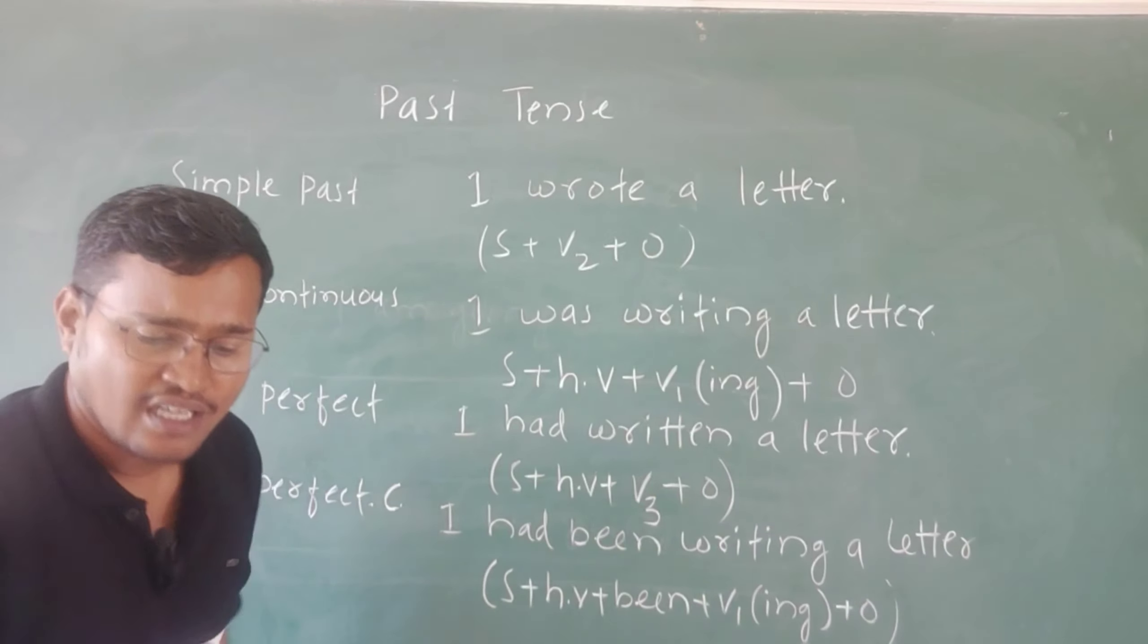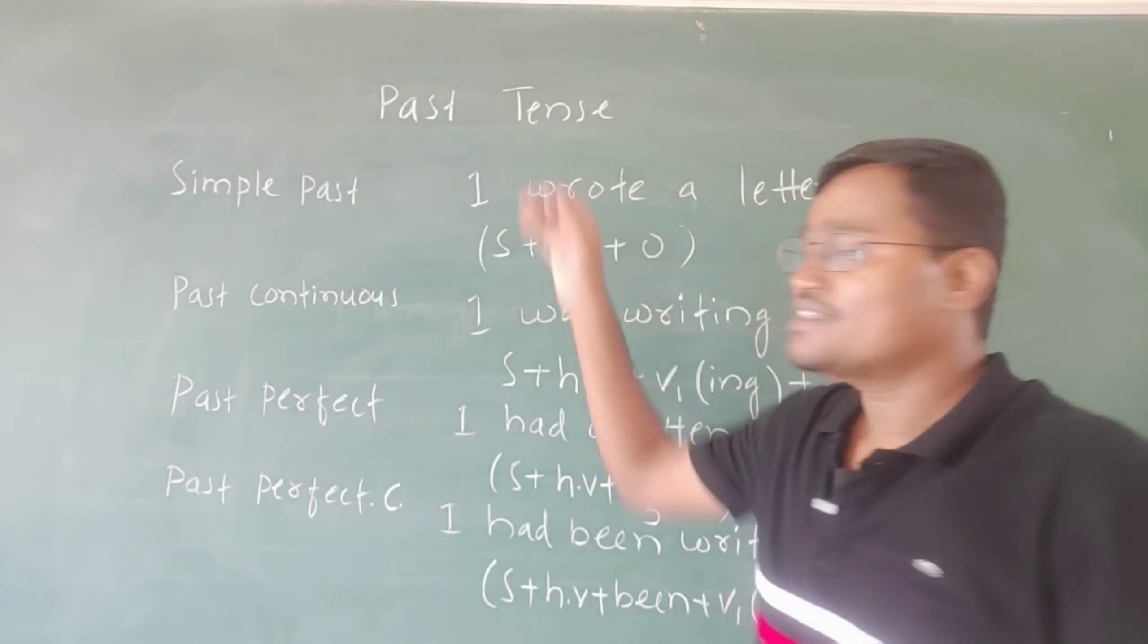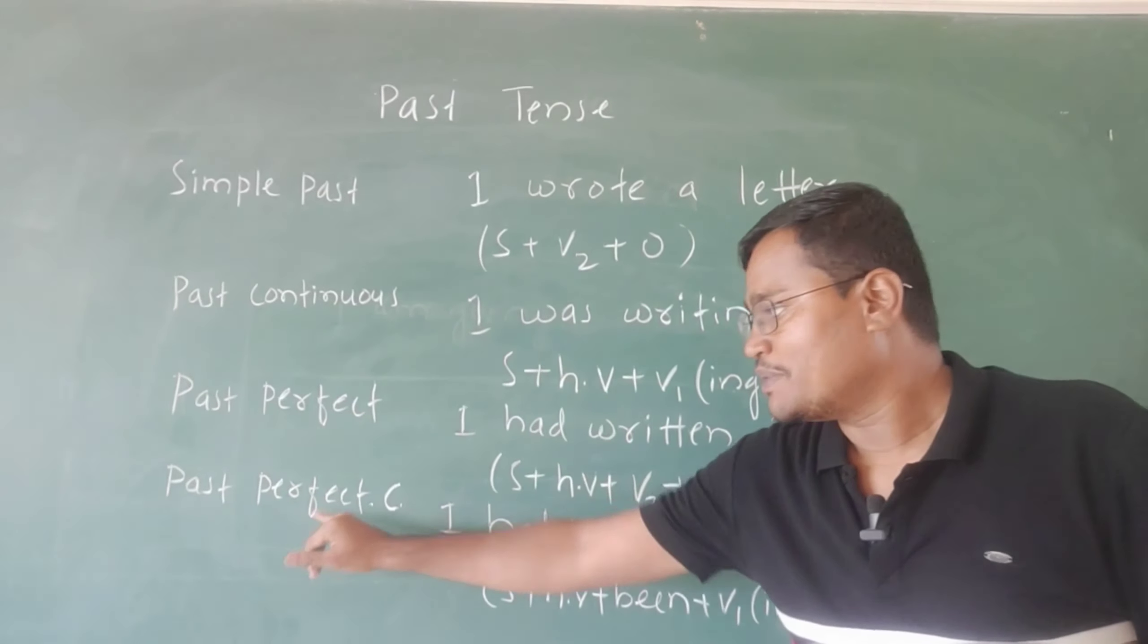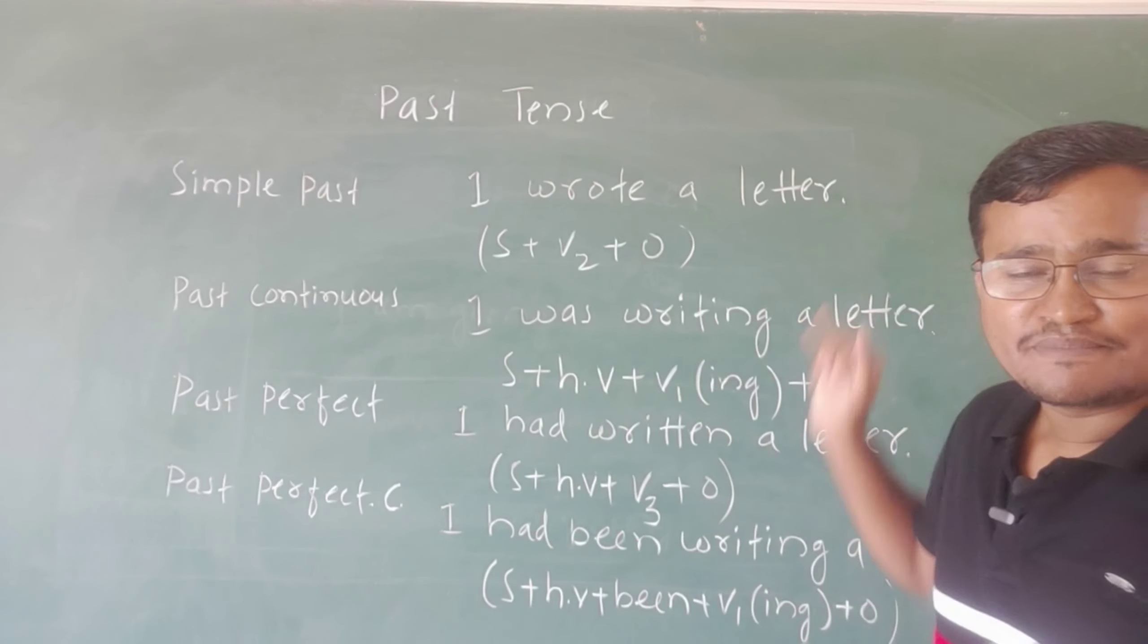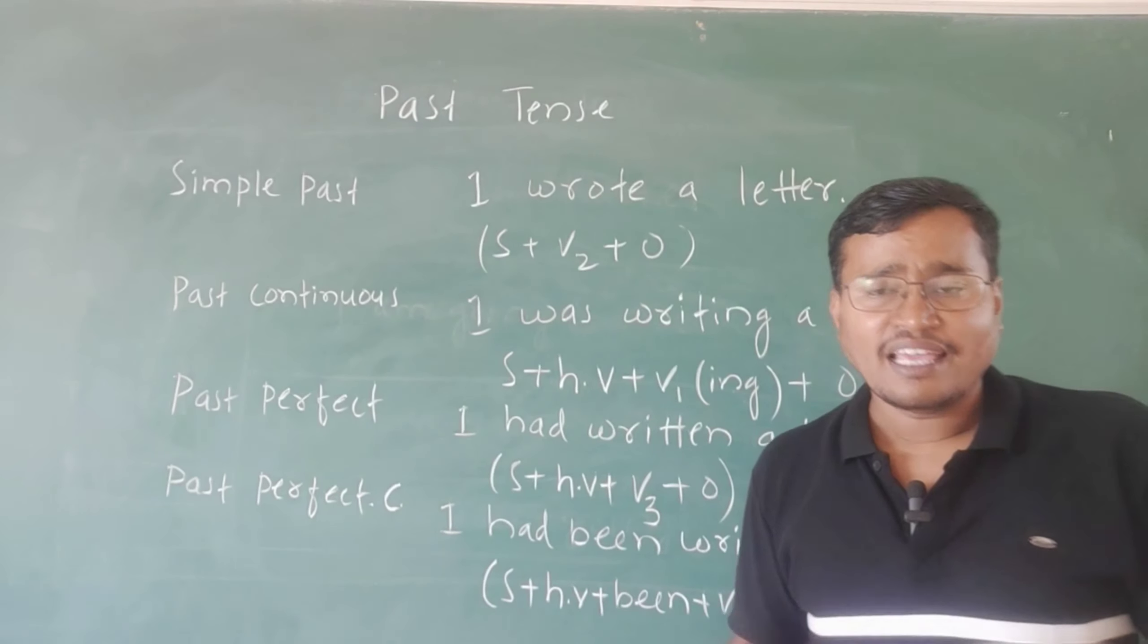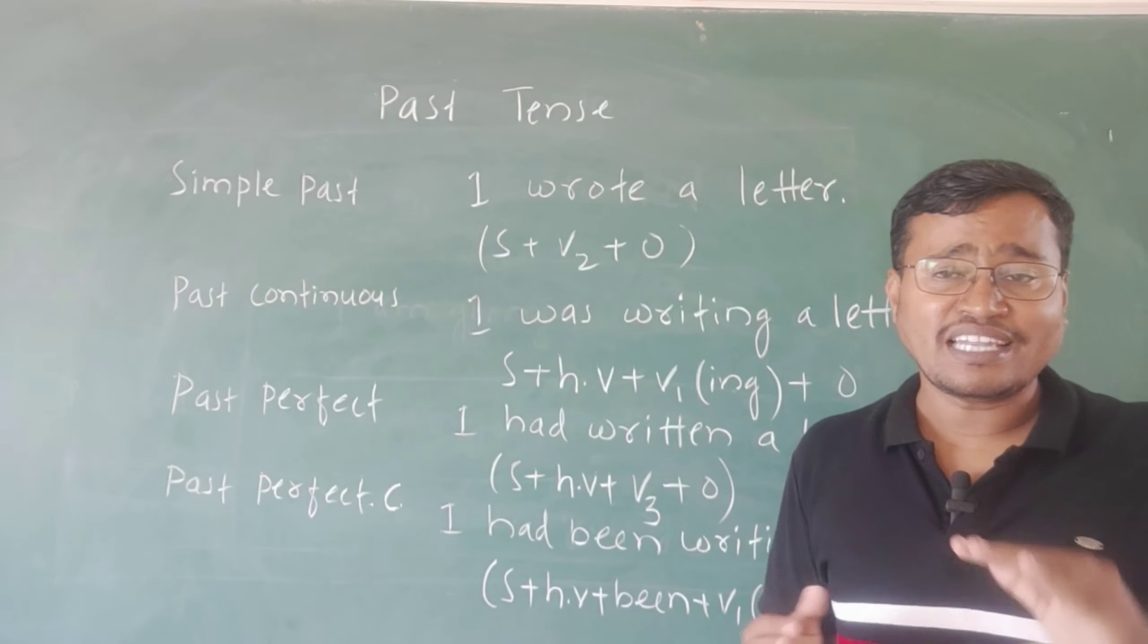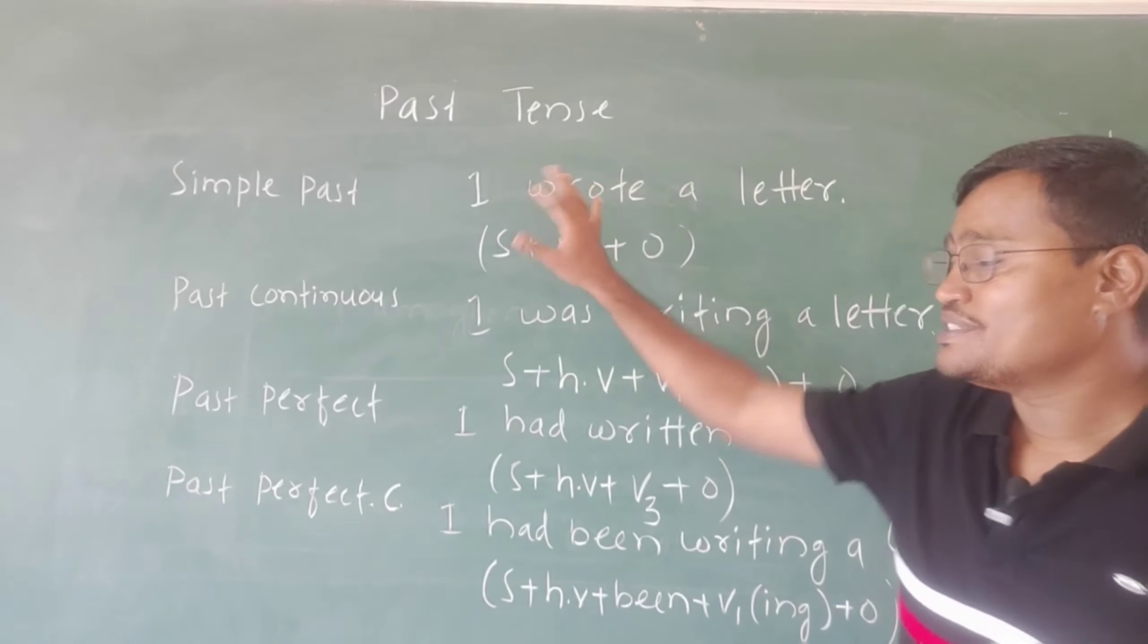I have explained only this much. Past tense is divided into four types: simple past, past continuous, past perfect, and past perfect continuous tense. 'I wrote a letter' - in simple past, actions are completed, like 'I finished my lunch', 'I went to market', 'I completed my classwork'. So we use simple past tense.